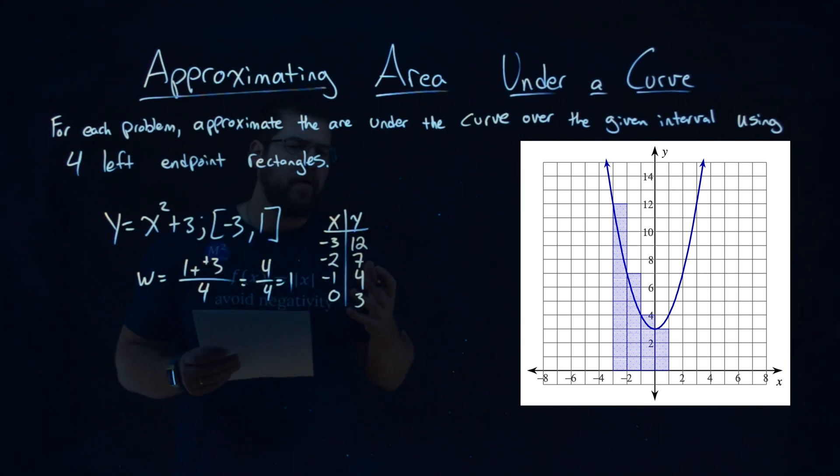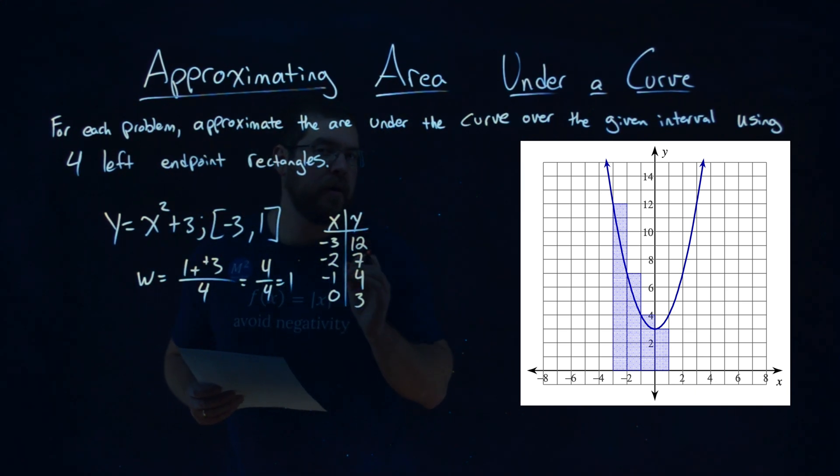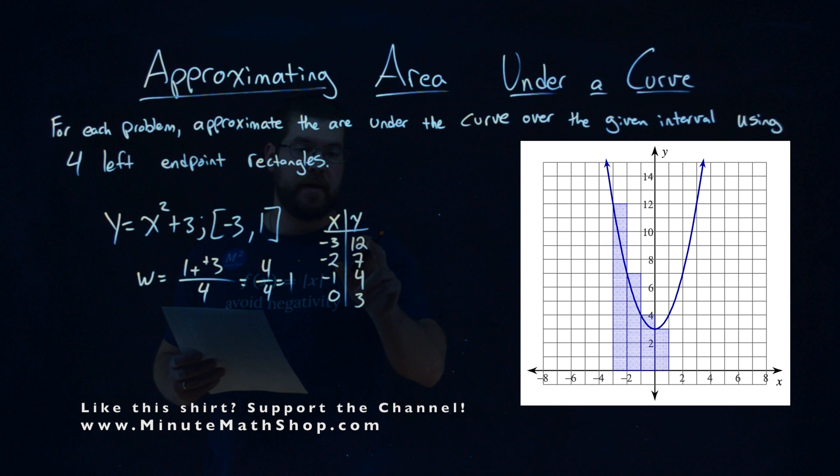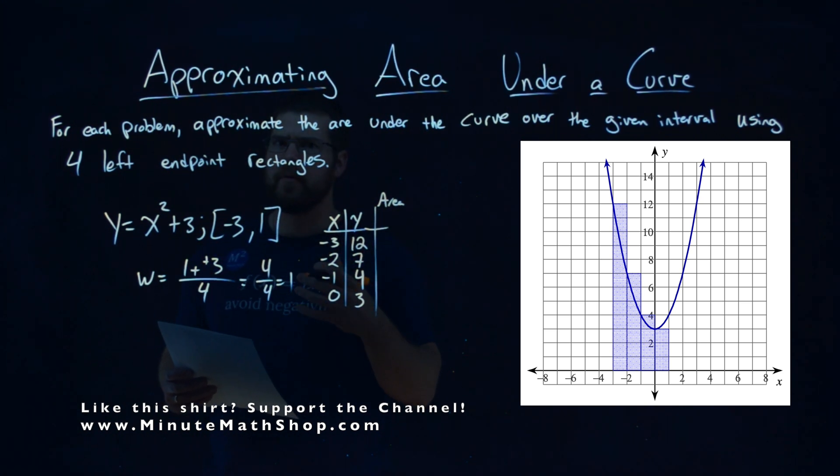So what does that tell us? Right now we have the y value, the height really, of each rectangle on the left endpoint of each rectangle. We got that. Now we need to find the area of each rectangle. To get that area, we take that height that we found and multiply it by the width. So we take that height, the y, times the width.